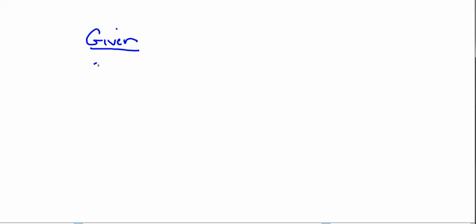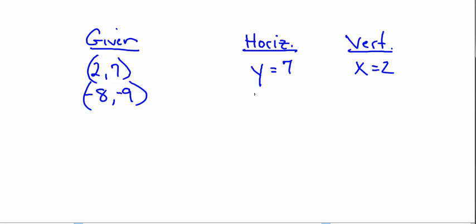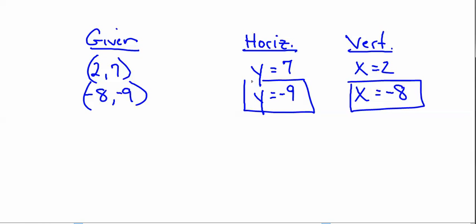So if you were given a point and needed to write an equation for the horizontal and vertical lines through it — let's say it's negative 8, negative 9 — the horizontal line equation would be y equals negative 9, and the vertical line would be x equals negative 8. Those are your equations.